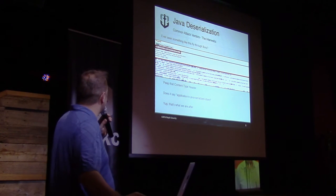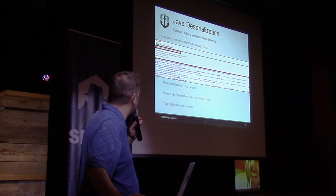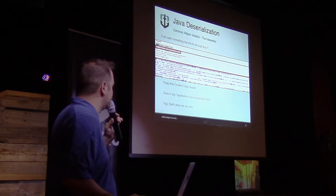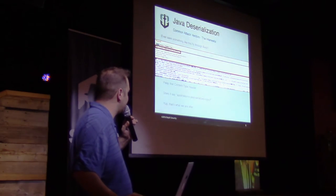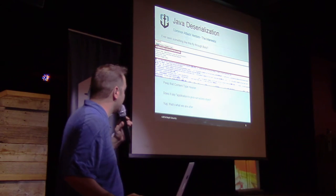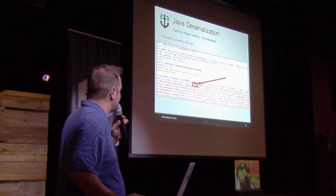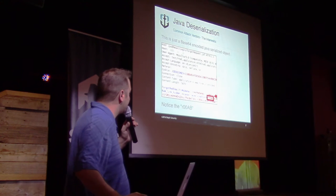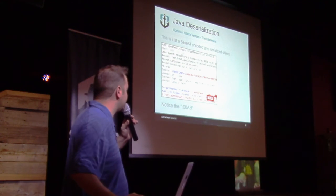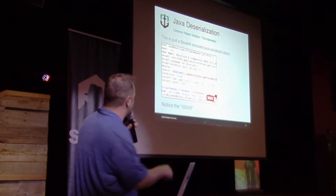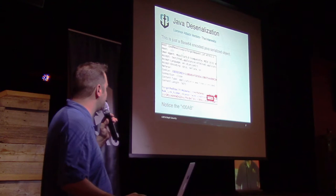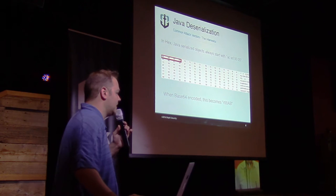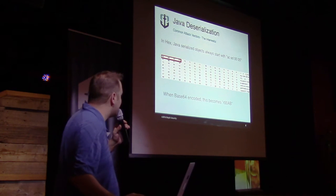Have you ever seen something like this fly through Burp? That is a Java serialized object. If you look at the content-type header, it says 'application/x-java-serialized-object', and that is exactly what we're looking for. What about a Base64-encoded version? You can always spot them because you'll always notice 'rO0A' — capital R, zero, zero, capital A — in front of it. When you Base64 encode it, these first four characters are pretty much always the same.